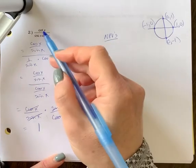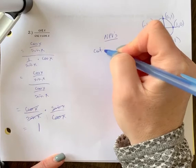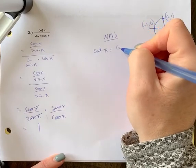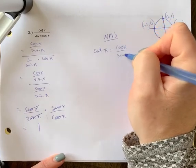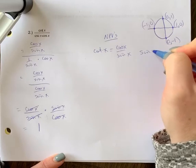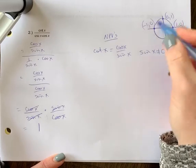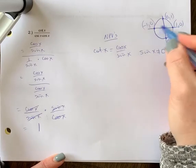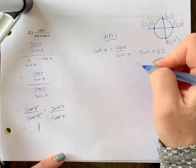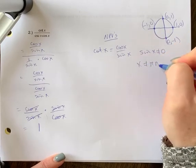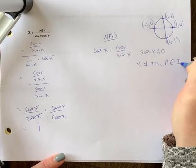Let's look at the NPV. So individually, cotan x. Cotan x is equal to cos x over sine x, which means sine x cannot equal 0. So when we look at our circle, that occurs at 0 pi, 2 pi, 3 pi, etc. So we say x cannot equal pi n, where n is the element of integers.